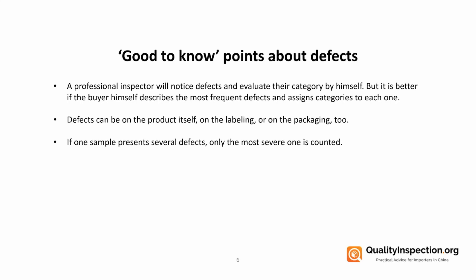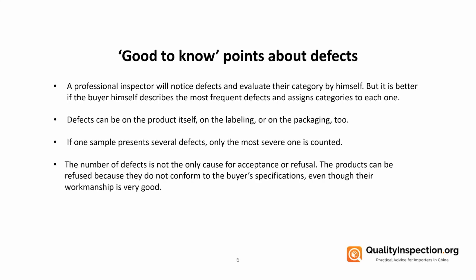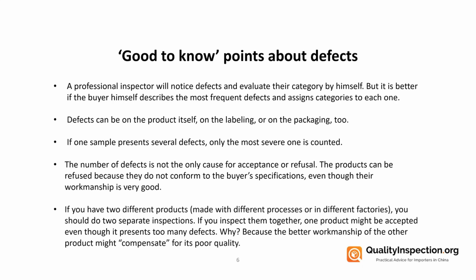If a sample has several defects on one item, only the most severe is counted. The number of defects isn't the only cause for acceptance or refusal of a lot — products can be refused because they don't conform to a buyer's specifications even though the workmanship is really good. You also need to be careful not to mix two different products made with different processes or in different factories in one inspection. They need separate inspections, because if inspected together, better quality items could compensate for lower quality ones, and poor quality products might still pass.